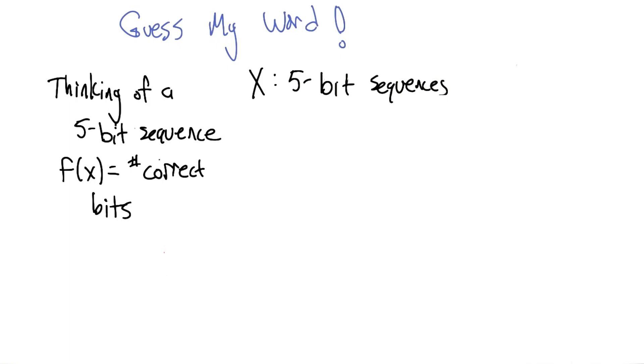All right, I want you to guess my word using this hill climbing approach that we've just been talking about. And unfortunately, we tried this with actual words and the space is a little bit big and frustrating. But what we can do instead is pretend that a five-bit sequence is a word. So I'm thinking of a word, and by word I mean five bits.